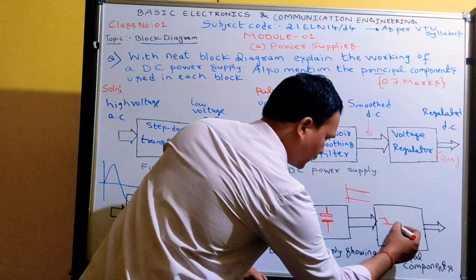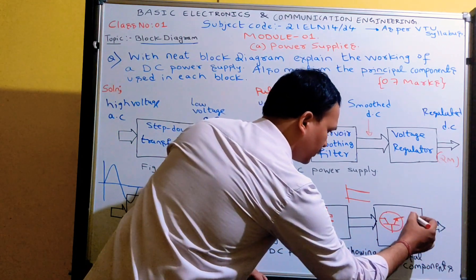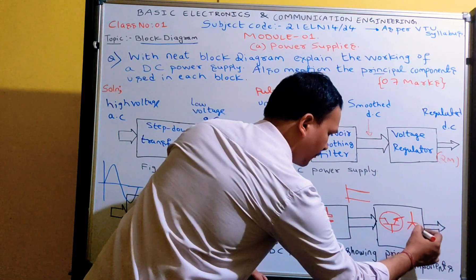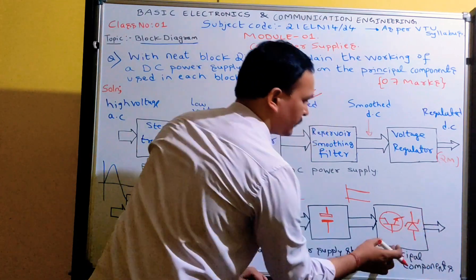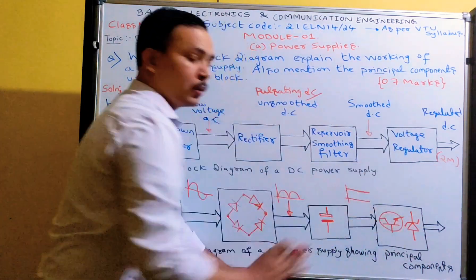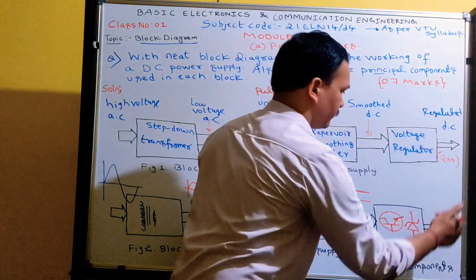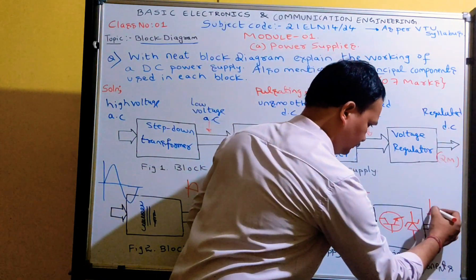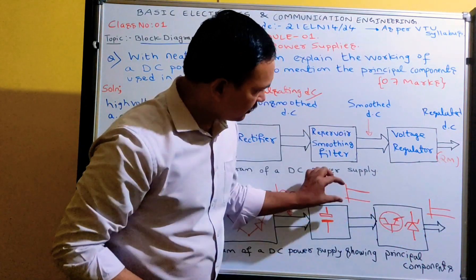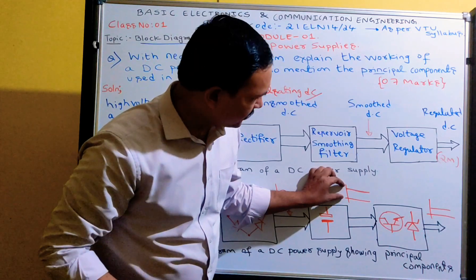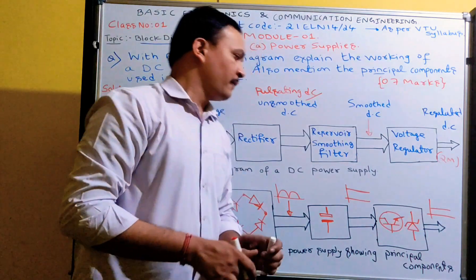The voltage regulator may use a transistorized regulator — it may be a transistor or it may be a Zener diode. These are the principal components that come under the voltage regulator block. The output of this regulator will be a constant voltage. You should note that this output magnitude is less than the input — for example, if input is around 10 volts, the output may be 5 volts.